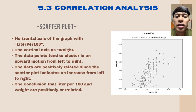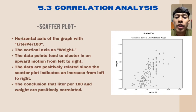Explanation for scatterplot: Label the horizontal axis of the graph as liter per hundred and the vertical axis as weight. A broad view of the scatterplot reveals that the data points tend to cluster in an upward motion from left to right. The growth is not remarkable but there is a clear upward tendency. We may assert that the data are positively related since the scatterplot indicates an increase from left to right. As a result, we may conclude that liter per hundred and weight are positively correlated.